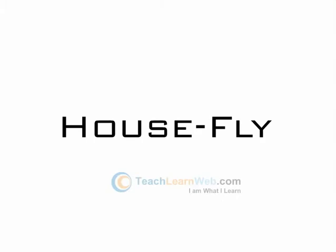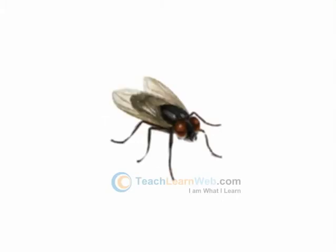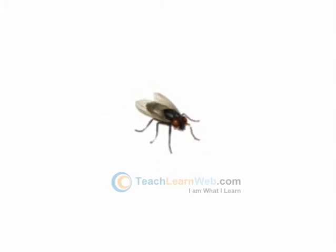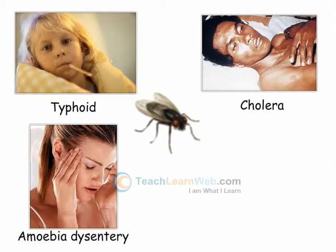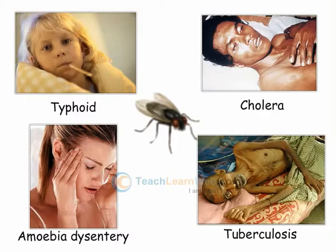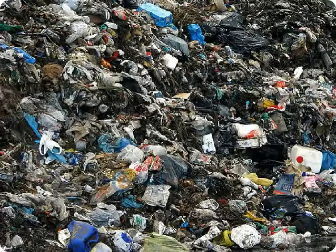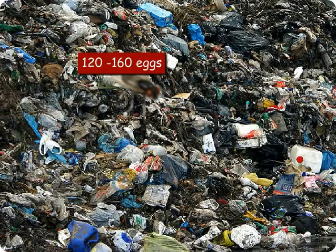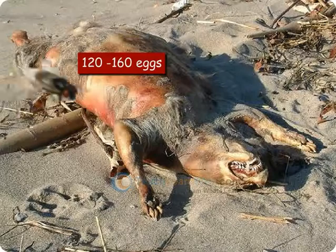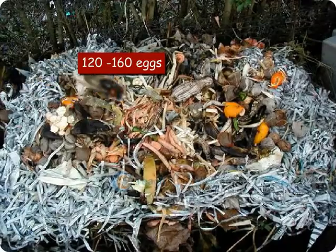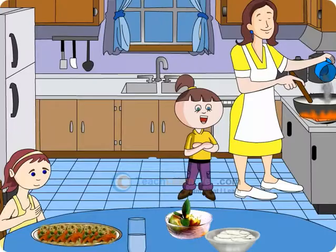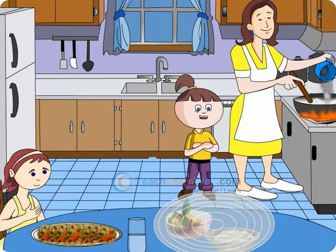Housefly. Houseflies, like mosquitoes, spread diseases like typhoid, cholera, amoebic dysentery, and tuberculosis. A female housefly lays 120–160 eggs in garbage or on decaying animal and vegetable waste. Food should be kept covered and insecticides can be used to kill houseflies.